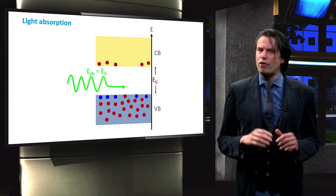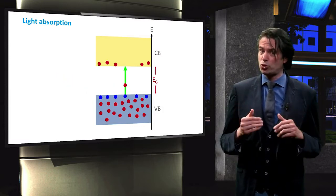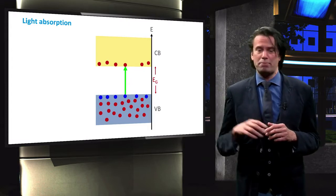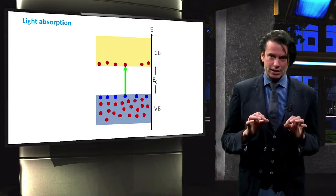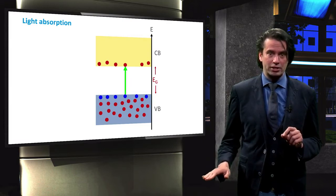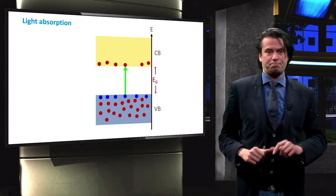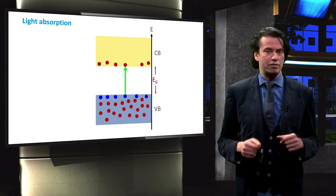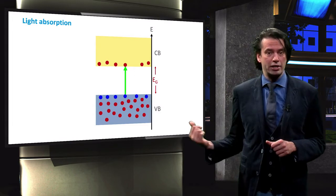As we recall, the photovoltaic effect involves the absorption of a photon with an energy that is at least equal to the band gap energy. This excites a valence electron from its bound state in the valence band to the conduction band. The excitation of an electron leaves a hole in the valence band, denoted by the blue circle.